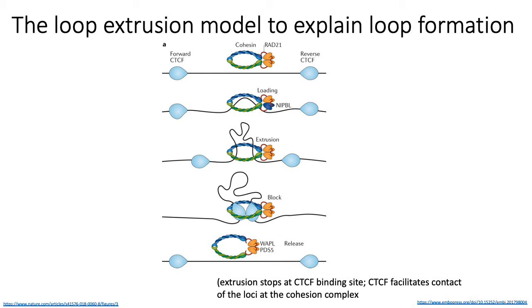Extrusion and binding by cohesin isn't typically a permanent event — cohesin can be released from the chromosome, and it's typically released through the activity of regulators like WAPL.